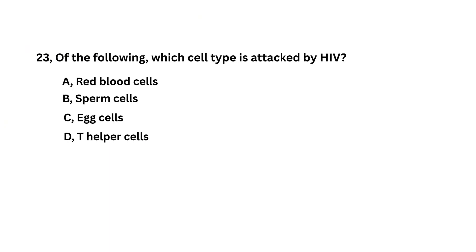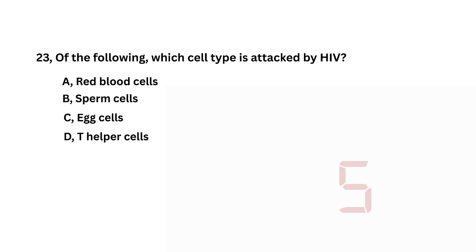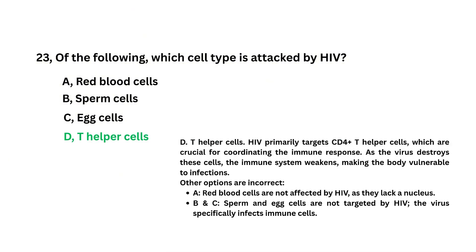Of the following, which cell type is attacked by HIV? Red blood cells, sperm cells, egg cells, T-helper cells. T-helper cells is the answer.